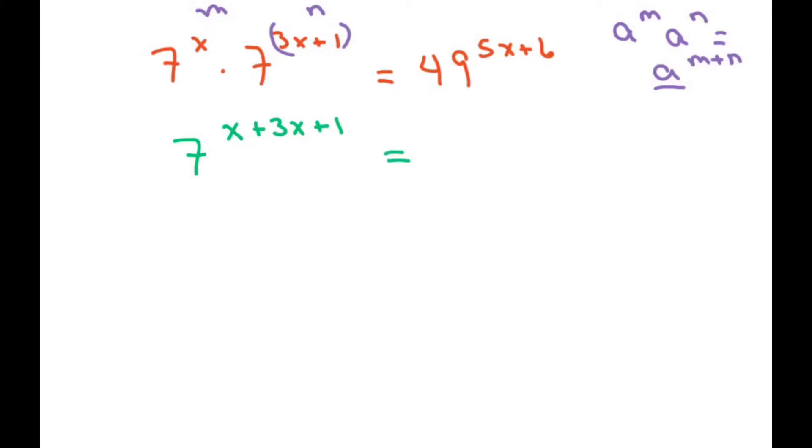Now I want my base to be the same here. So I'm going to write this as 7 squared. And you multiply the 2 to whatever is already in your power there, your exponential power. Since my bases now are the same,